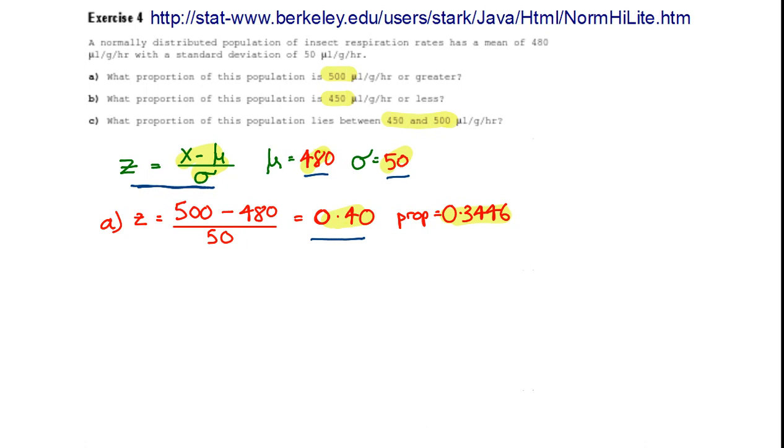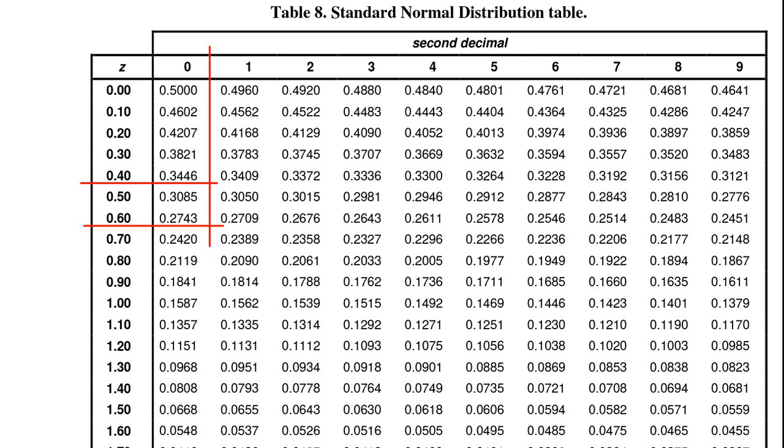Here I put 500 into the equation and that gives me a value of 0.40, which I can refer to the tables of the standard normal distribution. So, 0.40, I'm going to the 0.4 row, the 0 column, and that gives me a value of 0.3446.